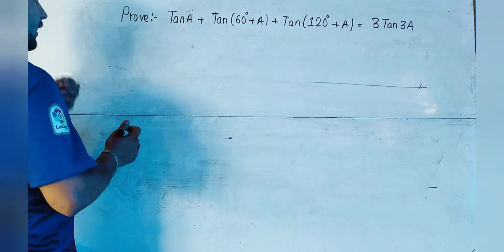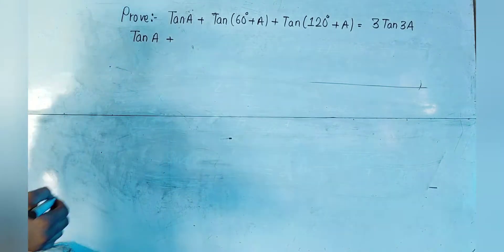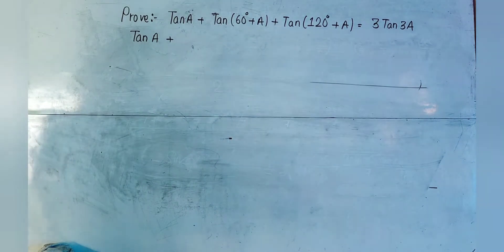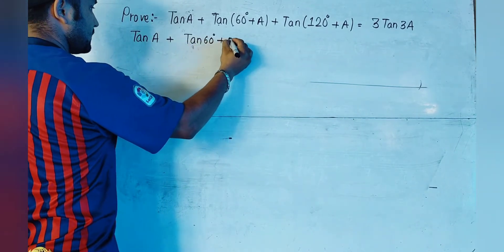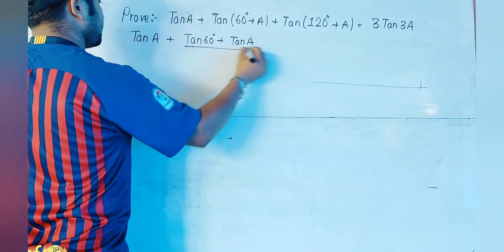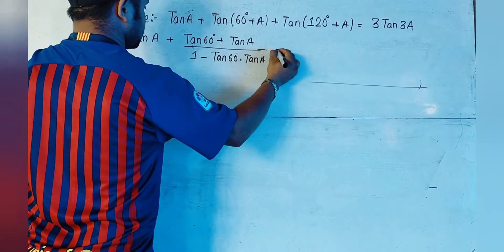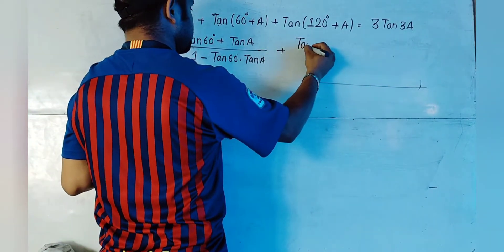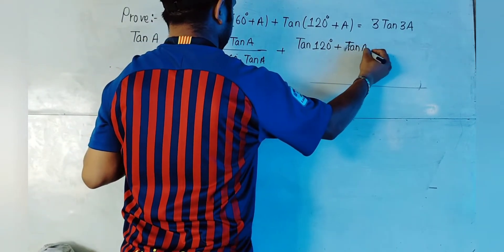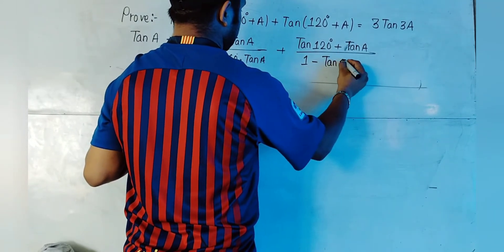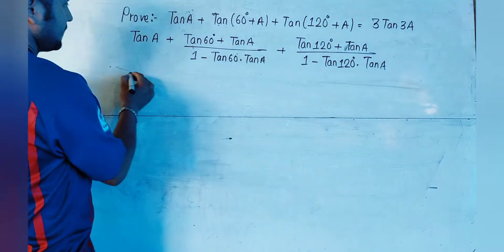As a first step, we are going to apply the formula of tan(A+B). Starting from the left-hand side, we can write tan(a) plus tan(60°+a). We'll apply the formula tan(A+B) = (tan A + tan B) / (1 - tan A · tan B). We do the same for tan(120°+a), giving us (tan 120° + tan a) / (1 - tan 120° · tan a).